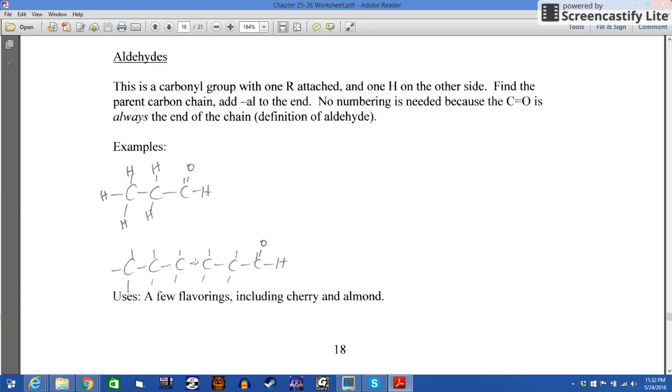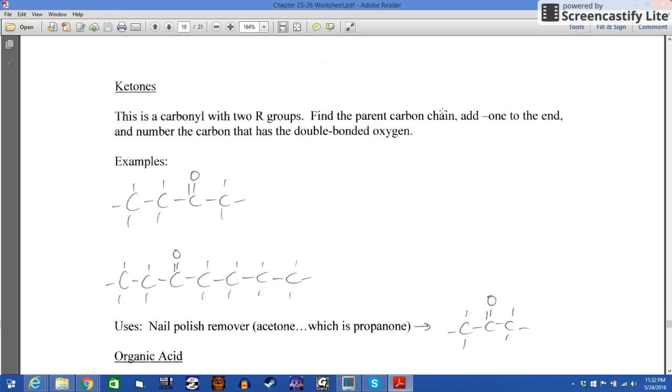This is six carbons long with a carbonyl. It's an aldehyde because it's got an H on this side. So this is hexanal. Uses for aldehydes are different kinds of aldehydes. There are a few flavorings, including cherry and almond. Oddly enough, that's actually the same aldehyde that is responsible for the flavor of cherry and almond. If you think about it in just a moment, there is actually a connection between those two flavors. Also, there are aldehydes like cinnamaldehyde, which is responsible for a lot of the flavor of cinnamon. So aldehydes are used on a routine basis.